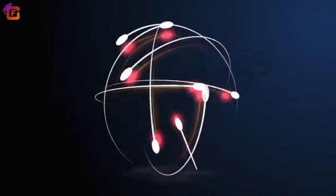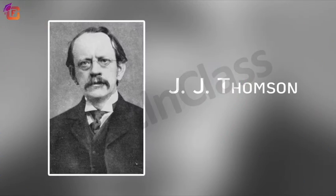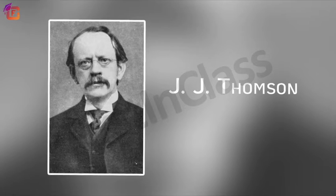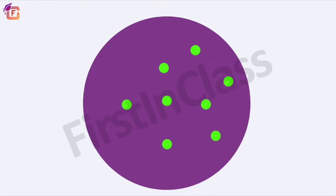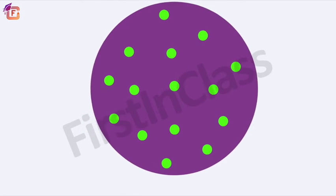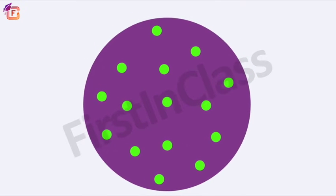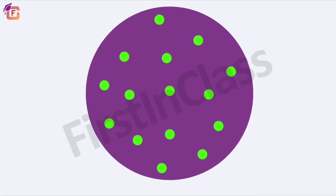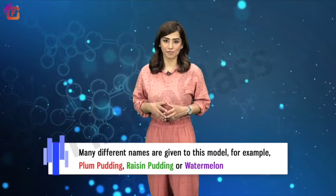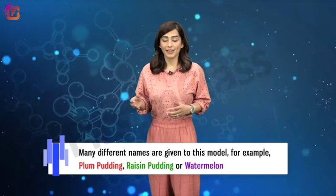J.J. Thompson in 1898 proposed that an atom possesses a spherical shape in which the positive charge is uniformly distributed and electrons are embedded into it to give it a stable electrostatic arrangement. Many different names are given to this model, for example plum pudding, raisin pudding, or watermelon.